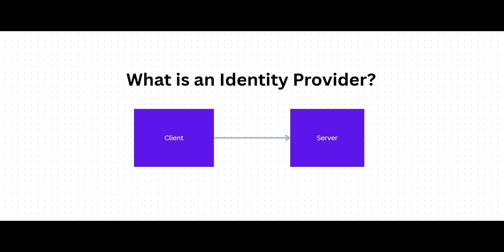Now that we know what identity means, let's talk about something equally important: the identity provider. An identity provider is a service that creates, stores, and manages digital identities, and provides authentication services so that users can securely access applications and systems. In the traditional client-server model, the client makes a request to the server, and the server needs to know who the client is before allowing access to data or APIs. This is where identity providers come in.